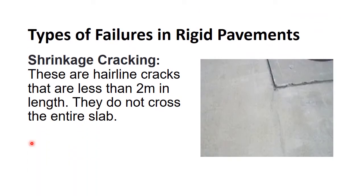Shrinkage cracking refers to hair-length cracks that are less than 2 meters in length. They do not cross the entire slab and may form in both longitudinal and transverse directions. The main causes are improper setting and curing process of the concrete slab, and higher evaporation of water due to higher temperature.